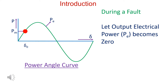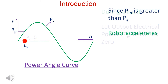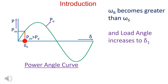A fault occurs. Output voltage is equal to 0 and hence output power is equal to 0. Since Pm is greater than Pe, the rotor accelerates. Omega_r becomes greater than omega_s, and load angle increases to delta_1.